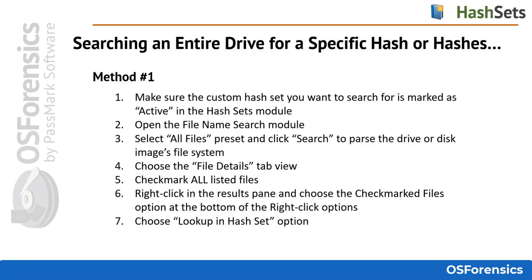Here's a breakdown of one way to search an entire system for specific hashes. Method one: make sure the custom hash set you want to search for is marked as active in the hash sets module. Open the file name search module. Next, select the All Files preset and click Search to parse the drive or disk image's file system. You will then choose the File Details tab view, check-mark all listed files, then right-click in the results pane and choose the check-marked files option. Finally, choose the Look Up in Hash Set option.